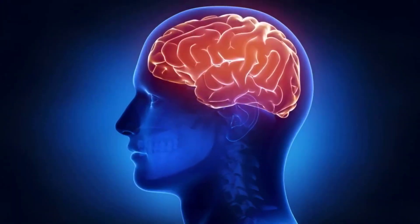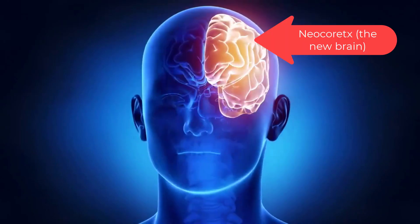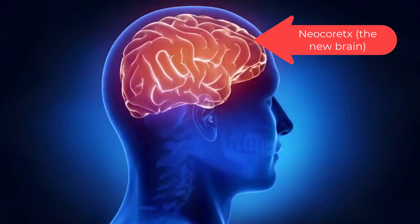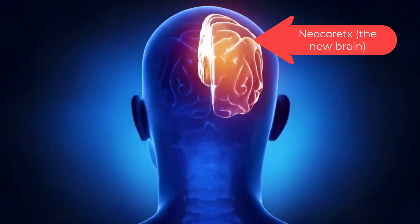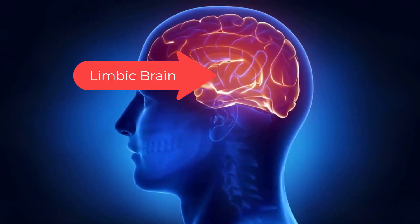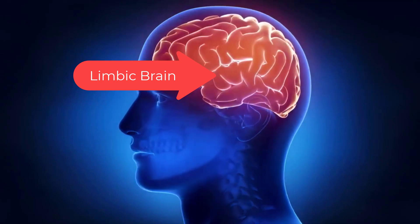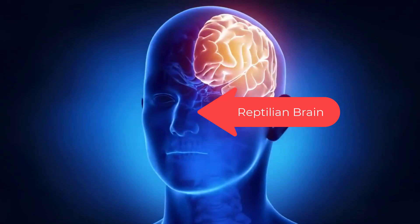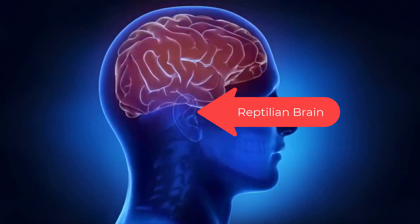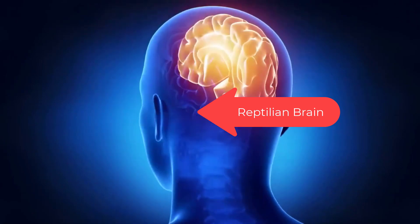Your brain has three basic layers and only one real decision maker. The new brain — the neocortex — thinks and processes rational data. The middle brain — the limbic brain — feels emotions and is our instinct for fight or flight response.